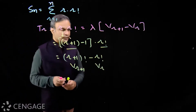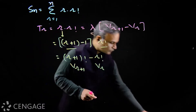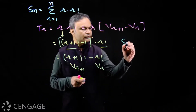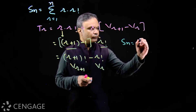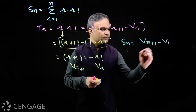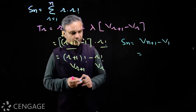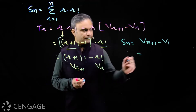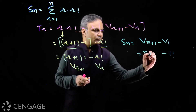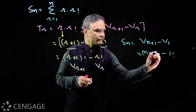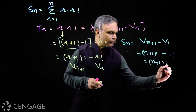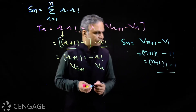So the sum of n terms of the series will be v(n+1) minus v1. Here v1 is 1 factorial and v(n+1) is (n+1) factorial. So the sum is (n+1)! minus 1.